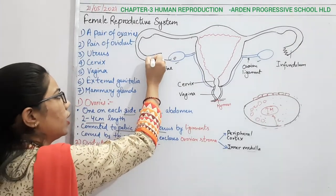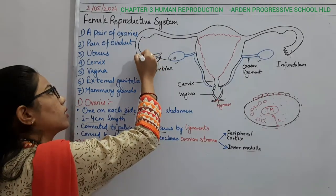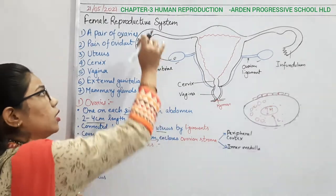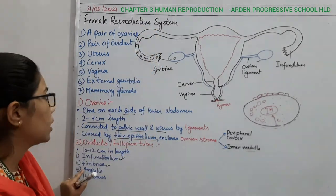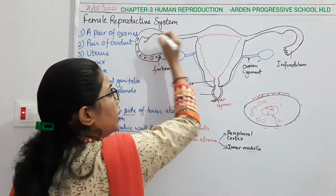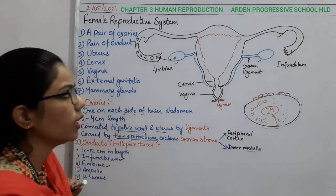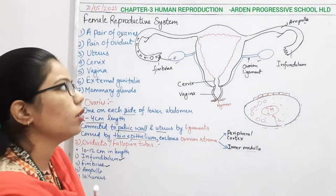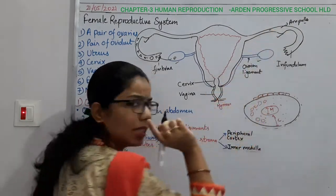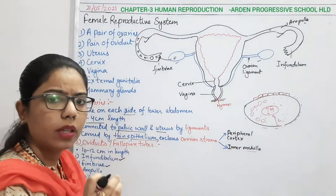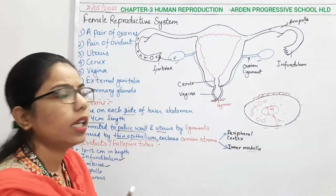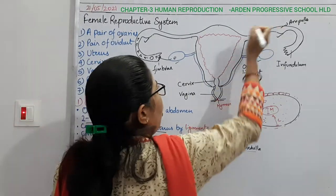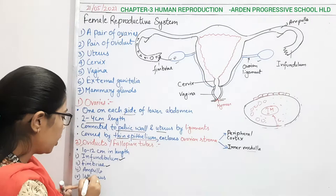When the egg reaches the infundibulum it moves along the fallopian tube into the wider region — the swollen structure called the ampulla. The ampulla is a swollen, wider structure present in the fallopian tube. Afterwards there is a narrower part — as the tube moves forward it becomes narrower — and this is called the isthmus.